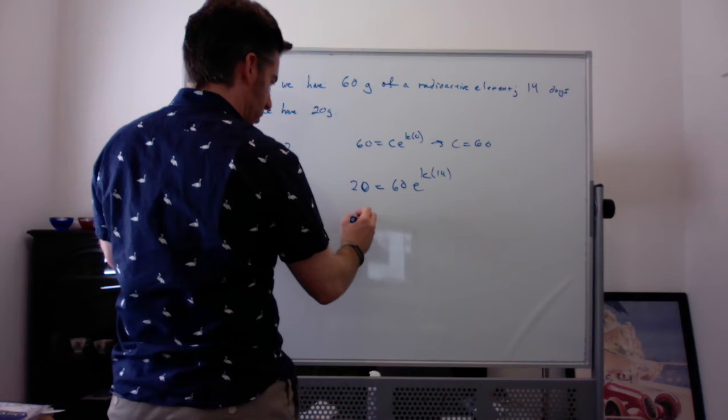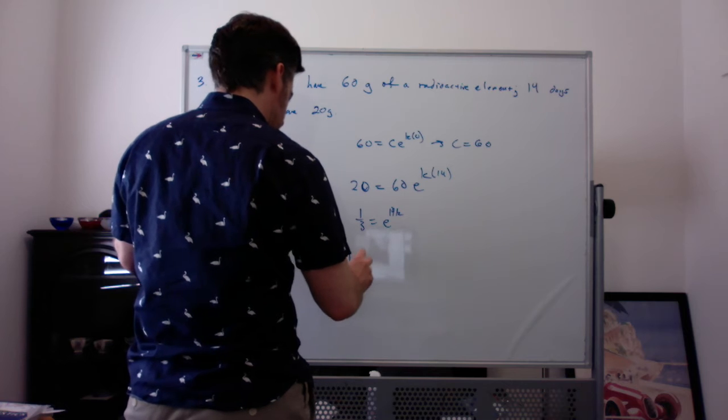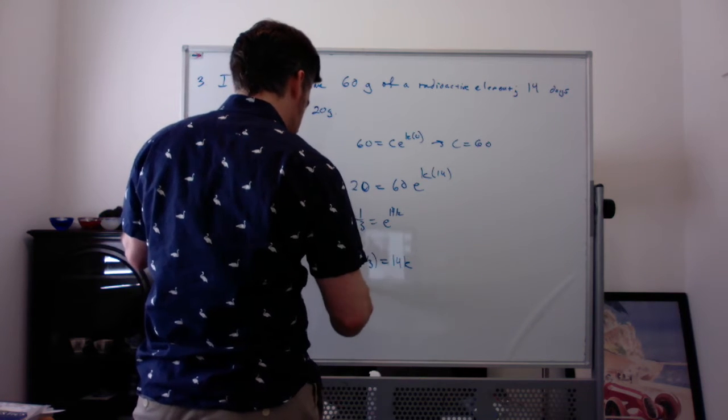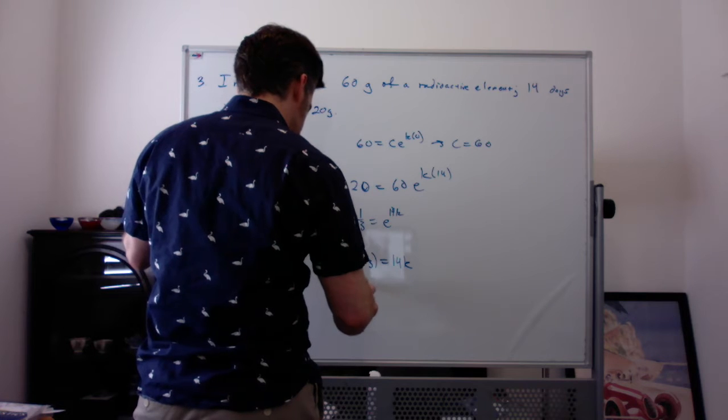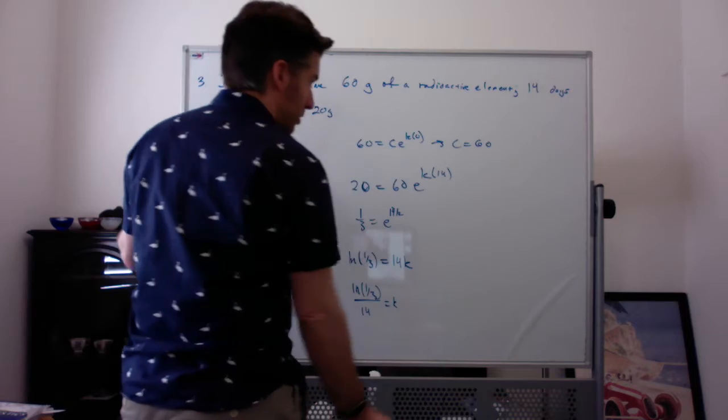So divided by 60, you get 1/3 equals e^(14k). Take the natural log of both sides. Divide by 14. So that's the k value.